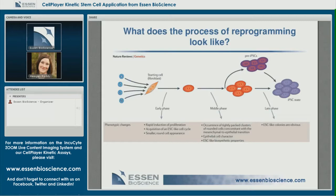For successful reprogramming to occur, several events must fall into place. We use the classic Yamanaka factors delivered by a Sendai virus in our reprogramming studies. OSKM — an abbreviation for the Yamanaka factors OCT4, SOX2, KLF4, and cMYC — must get into the starting cell type, which in our case were neonatal foreskin fibroblasts and human adult dermal fibroblasts. This begins to unravel key transcriptional changes.